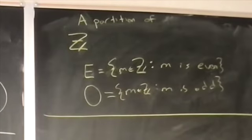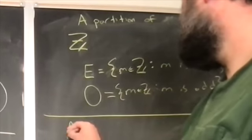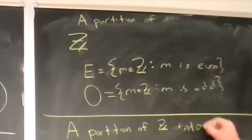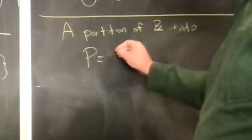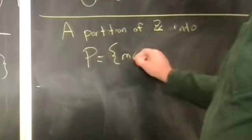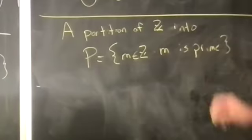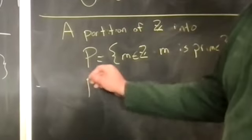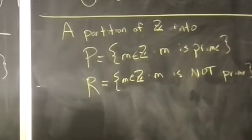What's another partition? We could do partition of z into b, which would be prime numbers, and r, which would be not prime numbers. That would work really well too.